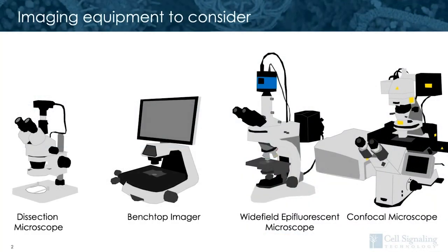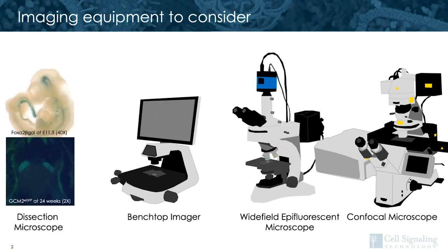Here are some examples of common imaging equipment. On the left, we have a dissecting microscope. These may be bright field or common fluorescent varieties. They're typically lower magnification instruments, but may have cameras attached. You can see some images here that I've taken on a dissection scope. They're convenient for showing data at lab meeting or putting data into a poster, maybe even some supporting data for a figure in a publication.